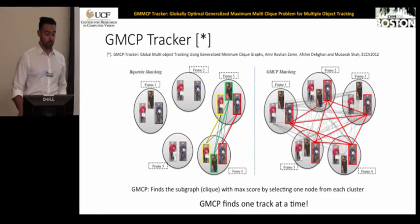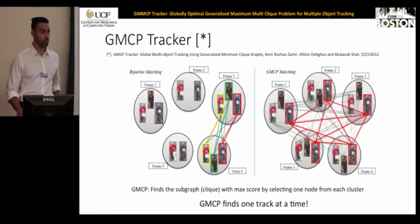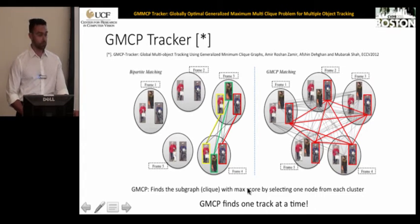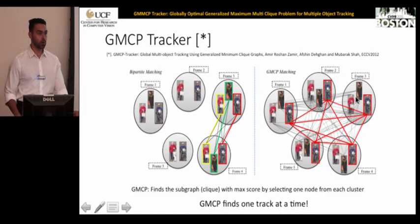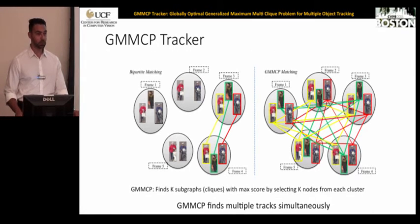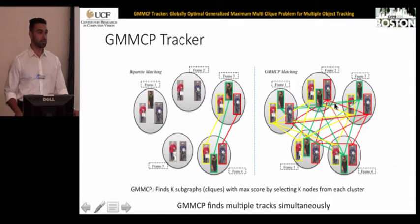In our earlier work, we proposed the GMCP tracker, published at ECCV 2012, where we used the Generalized Maximum Clique Problem to solve data association. GMCP finds one clique by selecting one node from every frame with the maximum score, then removes it and solves again for other tracks. In this work, we propose the Generalized Maximum Multi-Clique Problem (GMMCP), which finds all tracks simultaneously instead of one at a time.